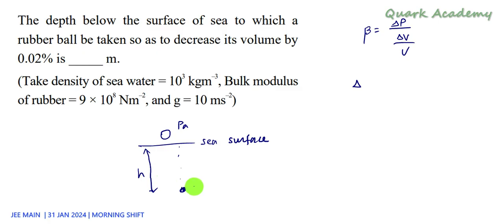then here the total pressure is going to be atmospheric pressure plus ρgh. So now the change in pressure becomes ρgh, because this PA - atmospheric pressure - will get cancelled.